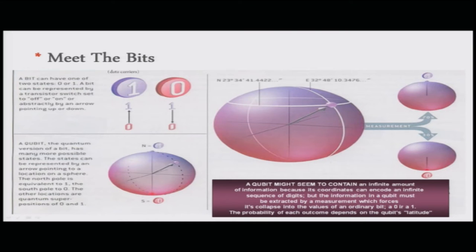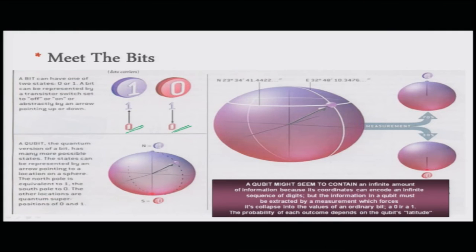A qubit, on the other hand, is the quantum version of a bit and has many possible states, represented by an arrow pointing to a location on a sphere. The north pole is equivalent to one, the south pole to zero, and other locations are quantum superpositions of zero and one. Although a qubit might seem to contain infinite information, measurement forces its collapse into zero or one, and the probability of each outcome depends on the qubit's latitude.